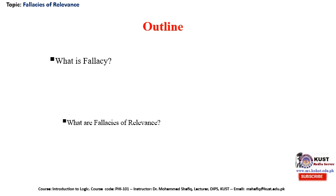In simple words, fallacies of relevance are those arguments where we cannot find any relevance between premise and conclusion, or between the premises themselves. There is a missing connection or link, but apparently these arguments look quite valid because they are quite tricky. We are now going to see what these five fallacies of relevance are, one by one.